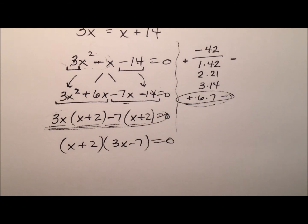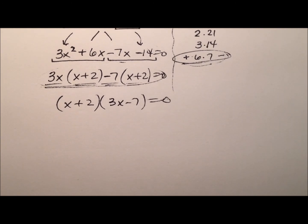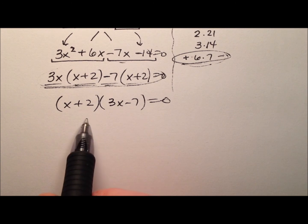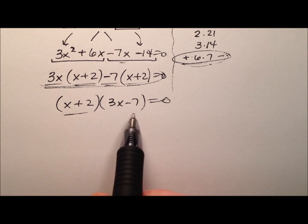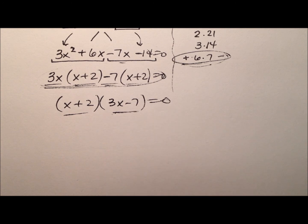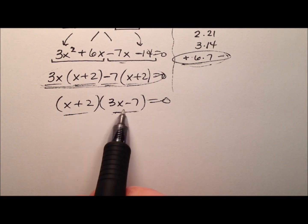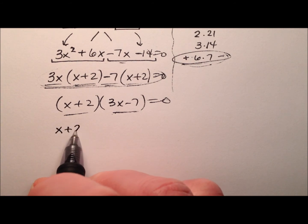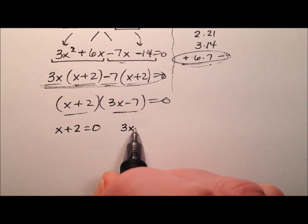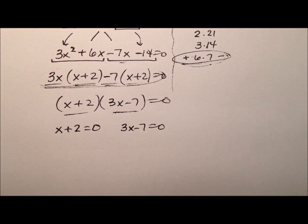Okay, so you see the nice relationship here. I have this fully factored and the zero property of multiplication is going to tell us if we're multiplying some things and we get zero, well, one of these has to be zero. So I'm going to account for both of them and say x plus 2 equals zero and 3x minus 7 equals zero, and I'm just going to solve each one of these independently of one another.